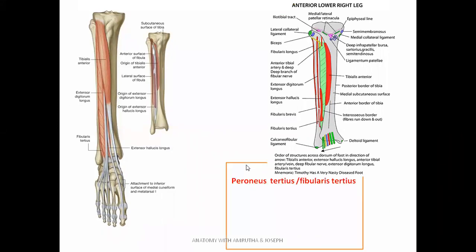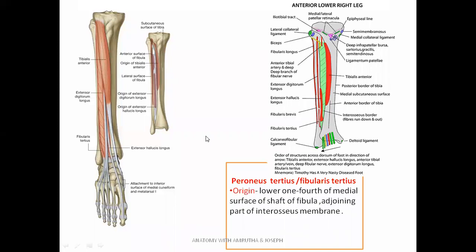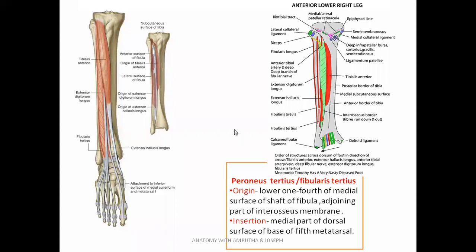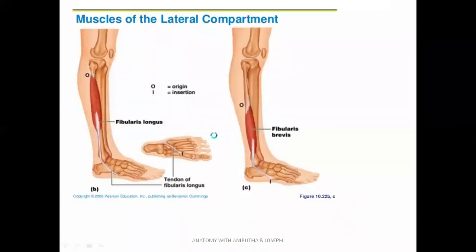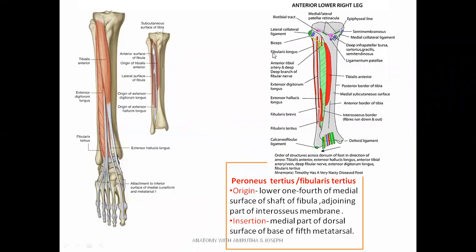Another muscle in the anterior compartment is peroneus tertius, also called fibularis tertius — a small muscle seen lateral to extensor digitorum longus. It originates from the lower one-fourth of the medial surface of the shaft of fibula and the adjoining part of the interosseous membrane. It is inserted to the medial part of the dorsal surface of the base of the fifth metatarsal. These are the muscles of the anterior compartment of the leg, all supplied by the deep peroneal nerve.